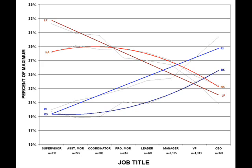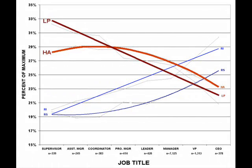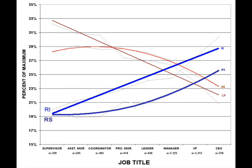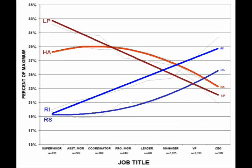This chart smooths the data by using trend lines to highlight the style relationships. The structured strategies of LP and HA fall with rising rank, and the unpatterned strategies of RS and RI rise. Predictability causes each organizational level to adopt these different strategic style commitments to do their job most effectively. The style trend lines look like this today, and unless you can find a way to rescind the effects of predictability, they will look like this a thousand years from now. This study has uncovered an organizational constant.